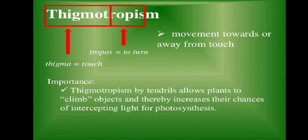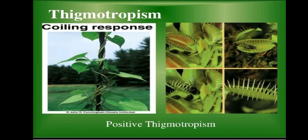Next, thigmotropism. Thigma means touch, trophos means to turn. The movement of a plant towards or away from touch is thigmotropism. It is typically found in twining plants and tendrils as they grow with support. Likewise, the Venus flytrap suddenly closes if an insect sits on it — the insect touches the plant and immediate response occurs: the Venus flytrap closes. This plant gets its nutrients from insects, so this is a good example of thigmotropism.